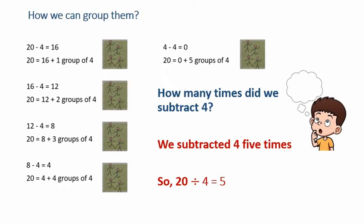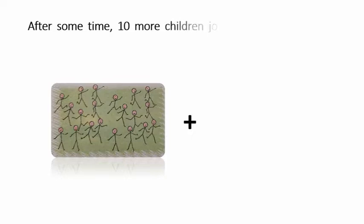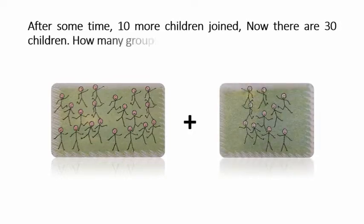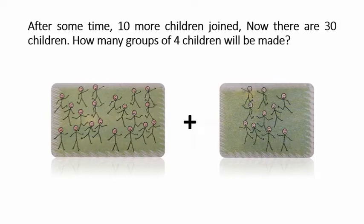Now let's update the previous example. After some time, 10 more children join. Now there are 30 children. How many groups of 4 children will there be?